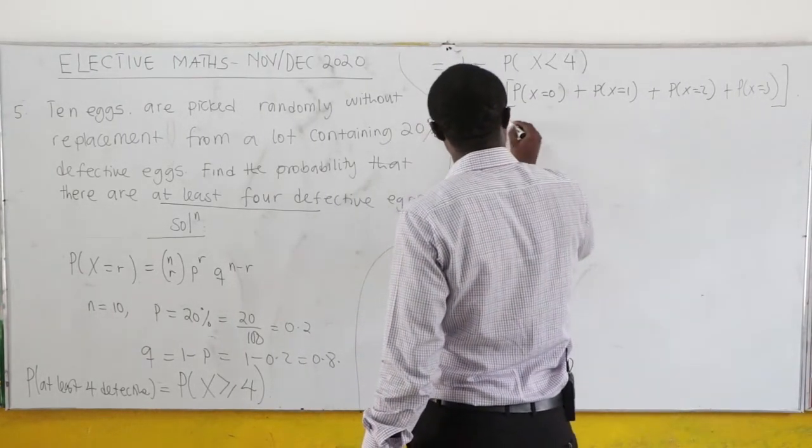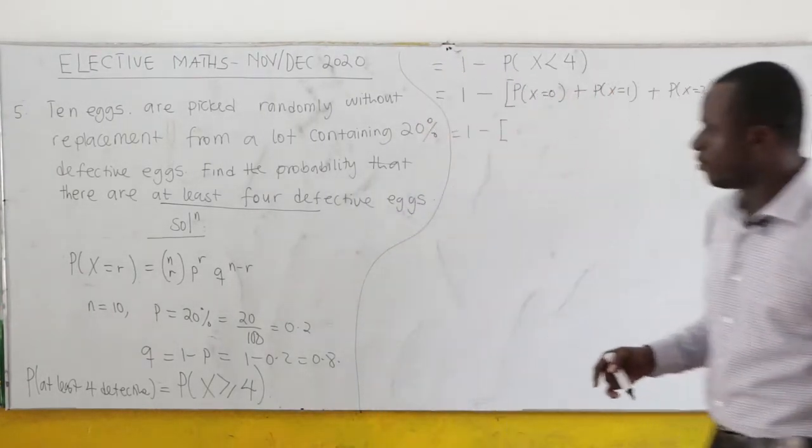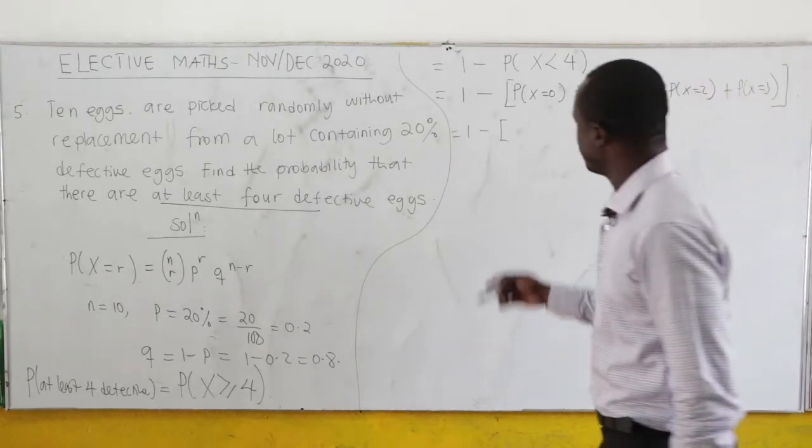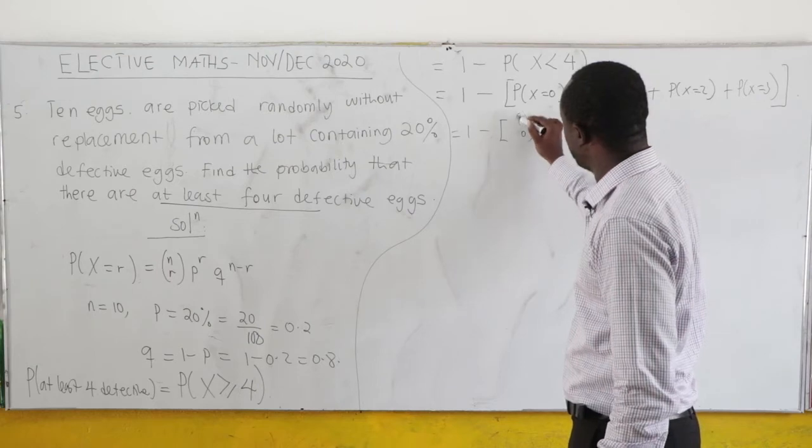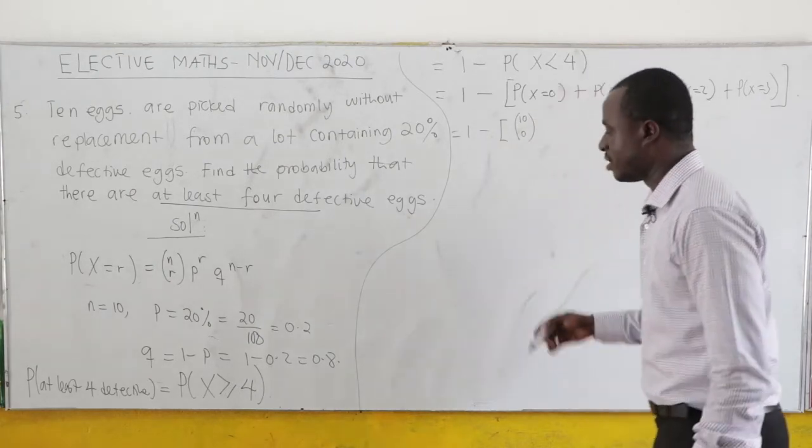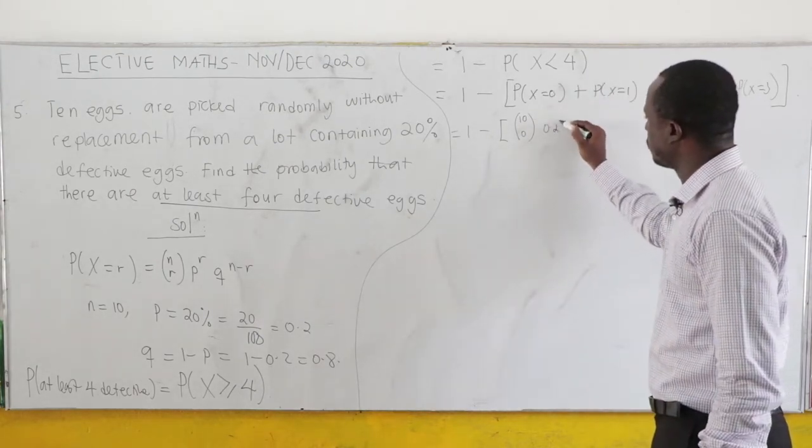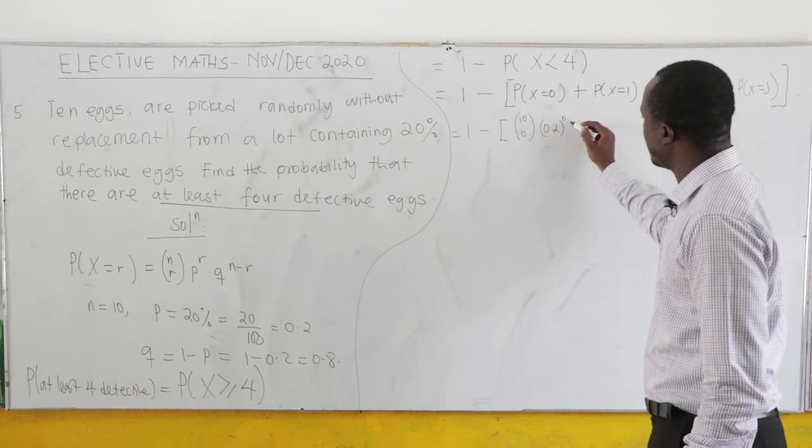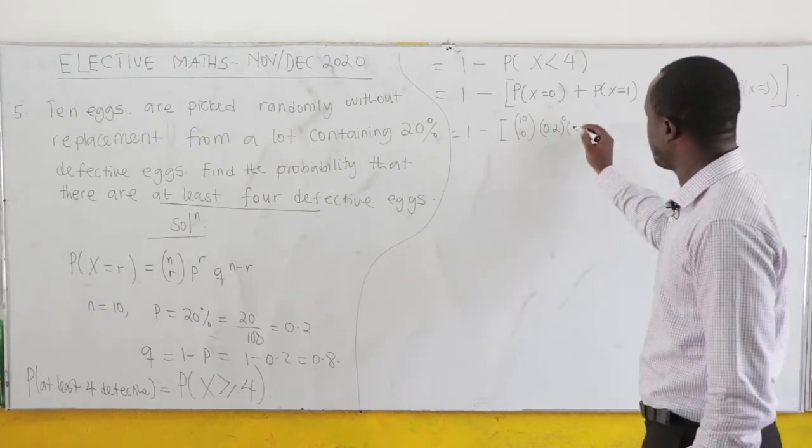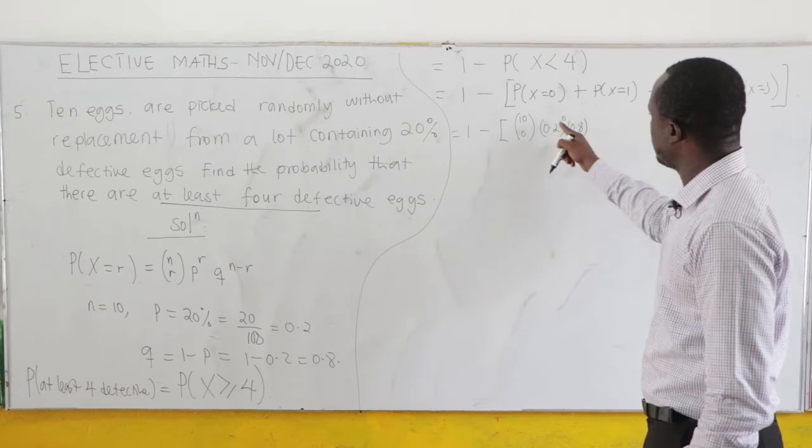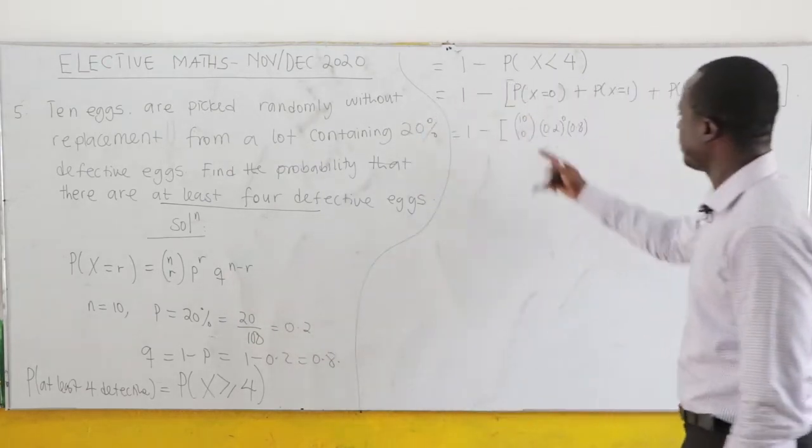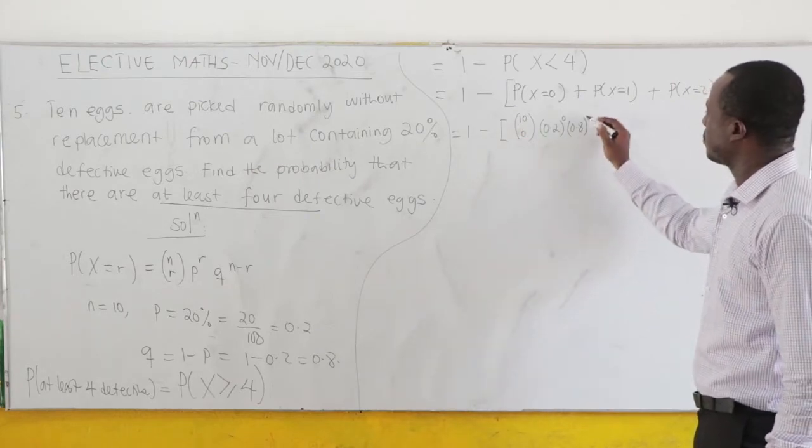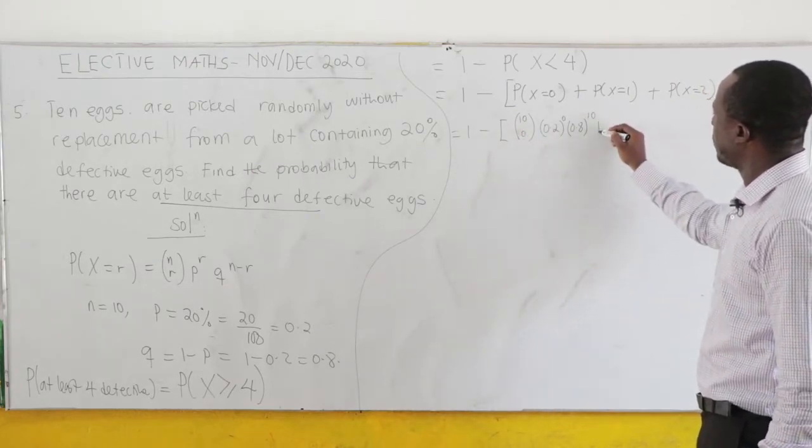Now, when X = 0, we know n = 10. So you get 10C0. Now, p = 0.2, so you have 0.2^0. And then q = 0.8, and then here we have n - r, and r is 0. So you have 0.8^10.